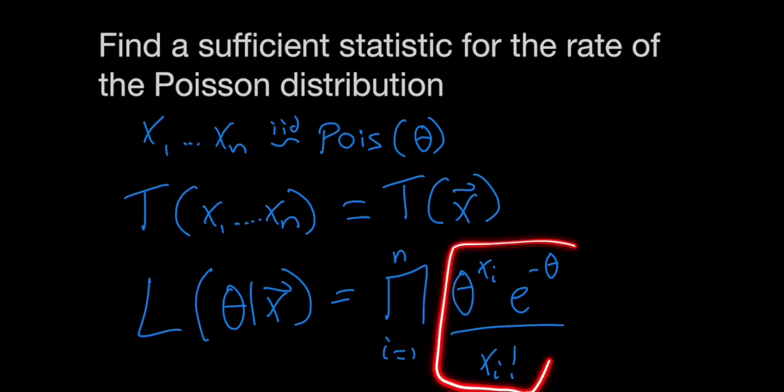This here is just the PMF of the Poisson, and we're taking the product of all of them because our data here are iid.